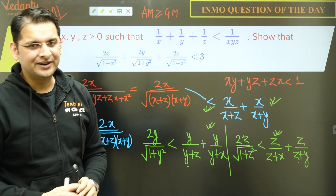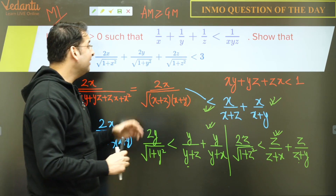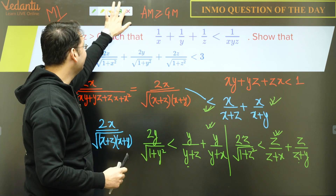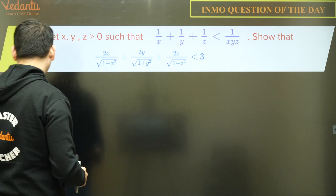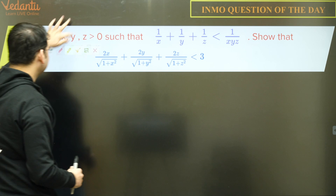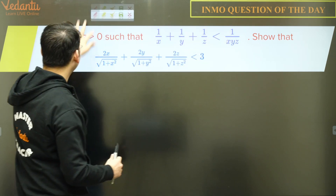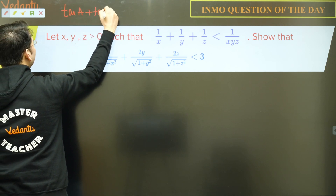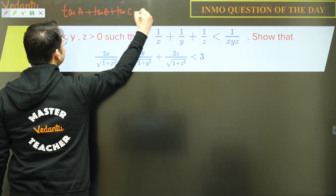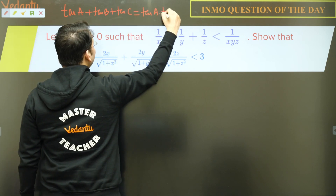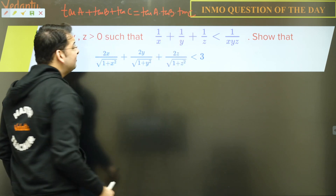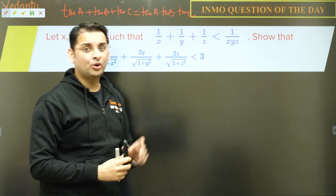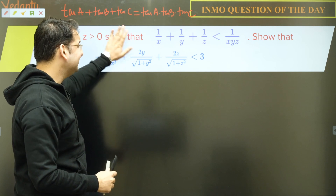Now let us see how to solve this using trigonometry — the trigonometric approach. We know that in a triangle where A + B + C = π, the identity tan A + tan B + tan C = tan A · tan B · tan C holds. This is one of the most important identities in a triangle.